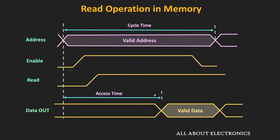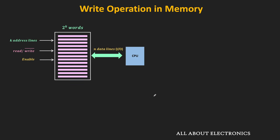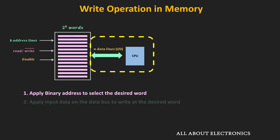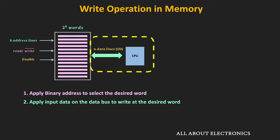That is how the read operation is performed in the memory. Similarly, for the write operation, let us see the sequence in which these different signals are applied. Once again, the address signal corresponding to the word into which we want to write the data is applied to the memory. Then the data which we want to write is also applied on the data line.